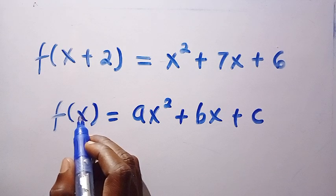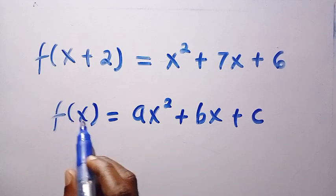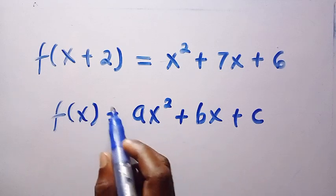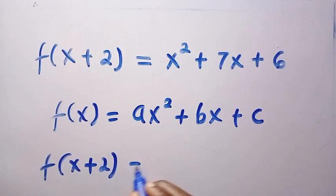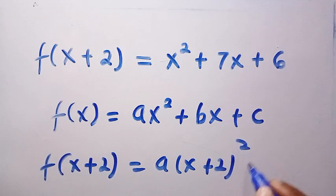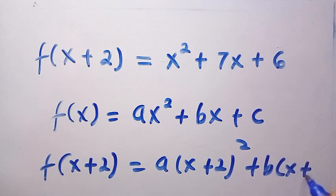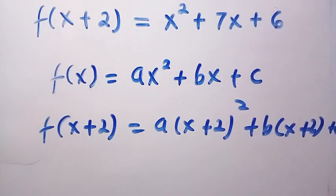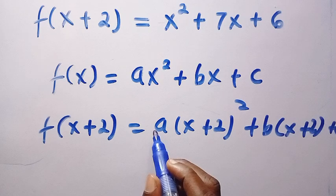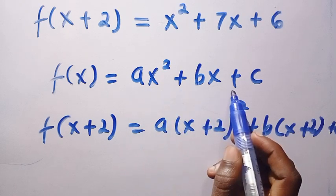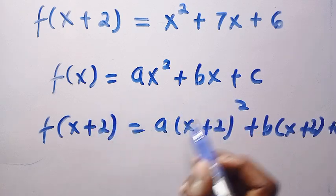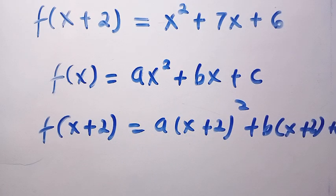Why this method is not advisable to use is because it takes time. We have x here, we would be replacing every single x with x plus 2. We would have f of x plus 2 equals a times x plus 2 squared plus b times x plus 2 plus c. We would expand x plus 2 squared and do comparisons to get the values of a and b. So we are not advised to use this. Here is the simple trick that we can use.